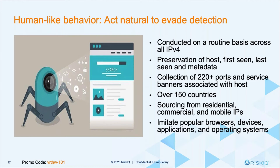Think of it this way: anytime we do an announcement and say we found a threat this particular way, the threat actor changes their method. If we came from our own data center, the threat actor would know and filter out our data. That's why we have to go through proxies. They might set up an attack that's only for a geographic region or a type of device — they might be targeting mobile or residential versus corporate IP space. So all of the things we do and the way that we change is to mirror what the threat actor does.